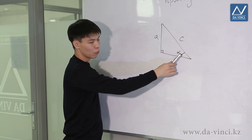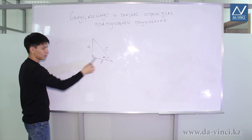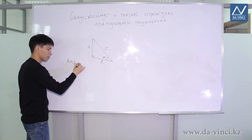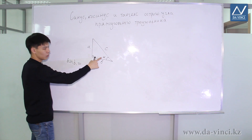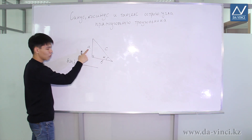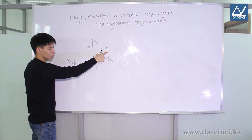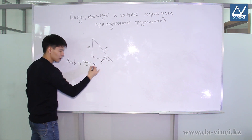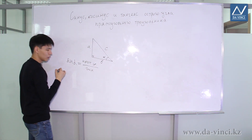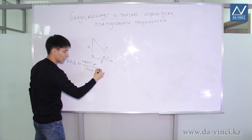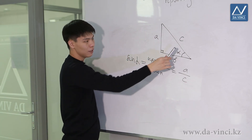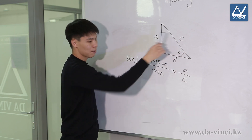The sine of an acute angle of a right triangle, for example alpha, is written as follows: sine alpha. The sine of an acute angle of a right triangle is the ratio of the opposite leg to the hypotenuse. That is, the sine of alpha is the opposite leg divided by the hypotenuse. In this case, the opposite leg is A and the hypotenuse is C. That is, the sine of alpha is A divided by C.